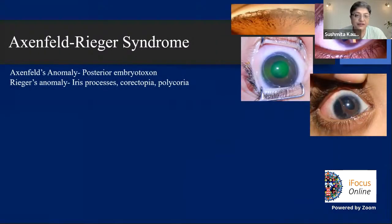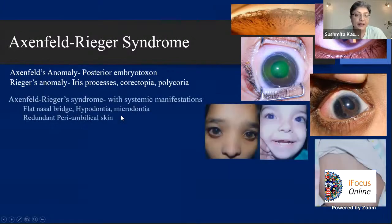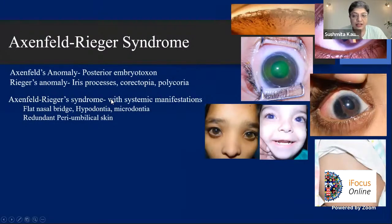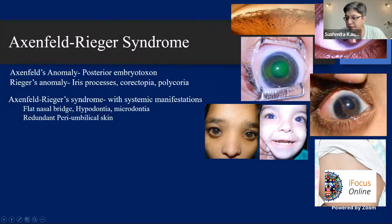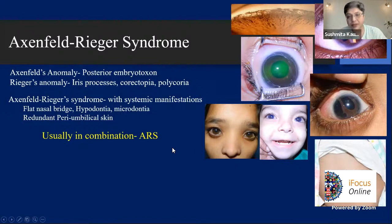Axenfeld-Rieger: posterior embryotoxon is Axenfeld's anomaly; iris processes, corectopia, and polycoria constitute Rieger's anomaly. The syndrome adds systemic manifestations: characteristic flat nasal bridge, hypodontia, periumbilical redundant skin — usually in combination. The preferred term is Axenfeld-Rieger syndrome as isolated anomalies are very unusual. It runs in families — one girl came with her father and grandfather, all having Axenfeld-Rieger; a mother had no idea until her baby was examined and she had exactly the same condition.